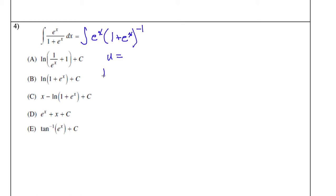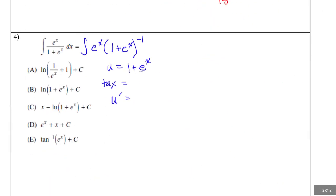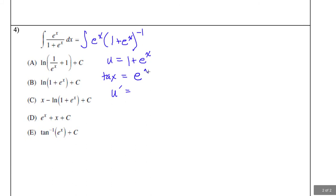So I need a u for this one — I need taxman — and I need u prime. So u is 1 plus e to the x. Taxman is knocking at the front door: e to the x. When I take the derivative of all that, I get e to the x. And it actually cancels out. So if I divide taxman by u prime, I get 1. I'm going to pay taxman — this e to the x turns into a 1.